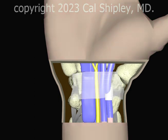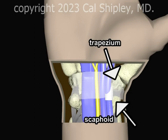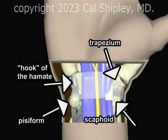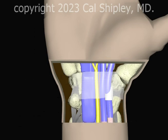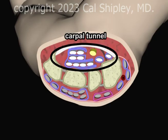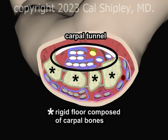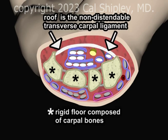Both sides of the transverse carpal ligament are firmly attached to carpal bones — on the thumb side to the trapezium and the scaphoid bones, and on the opposite side to the hook of the hamate and the pisiform bone. To sum up, the floor of the carpal tunnel is composed of rigid carpal bones, and the roof is composed of the fibrous, non-distendable transverse carpal ligament, which is firmly attached on both sides to carpal bones.